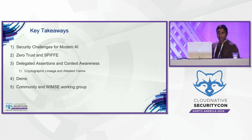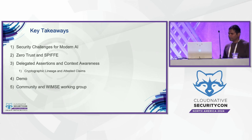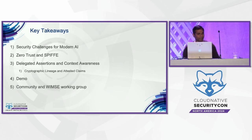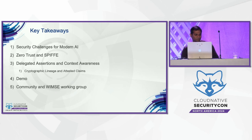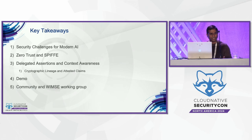Key takeaways today: first, we'll briefly talk about the security challenges with modern AI, specifically in the generative AI space. We'll give a slight introduction to Zero Trust and SPIFFE, then dive into something called delegated assertions and how to build context for Zero Trust for AI. Note that while this talk focuses on AI, this capability can be leveraged for non-AI applications as well. We'll go into a brief demo and talk about the community and how you could contribute.